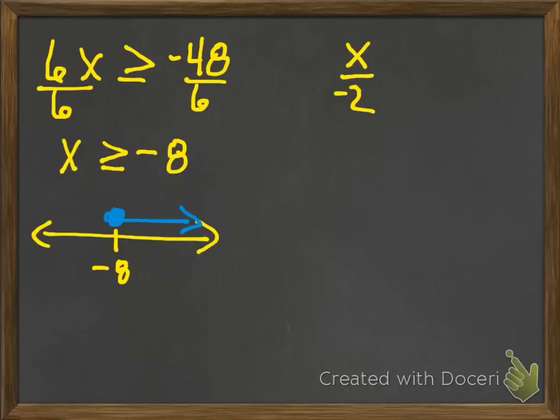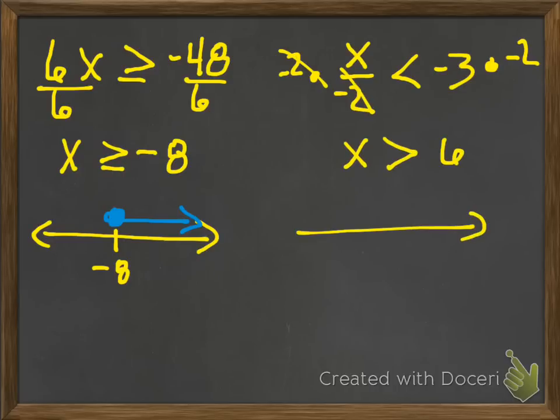Here's another example. x divided by negative 2 is less than negative 3. I'm going to multiply, since that's divide, multiply both sides by negative 2. And then when I do that, I will get x is less, I'm sorry, greater than 6. Now notice what the final answer sign is does not matter. What matters is that I was multiplying by negative 2, and that switched the direction of the inequality.